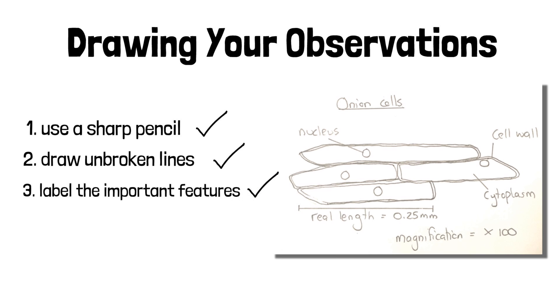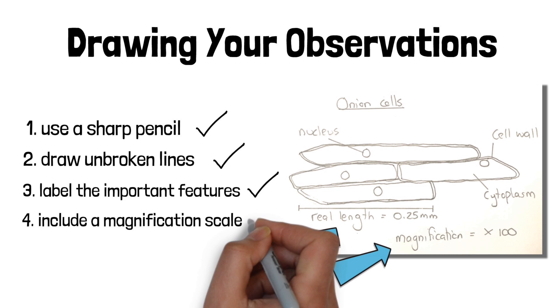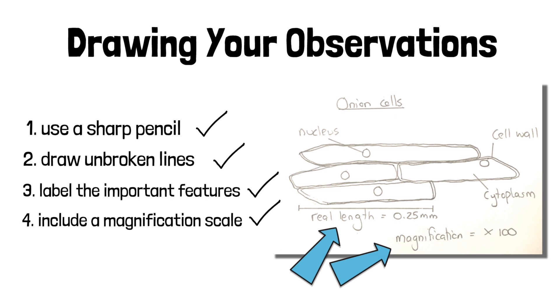The next thing to include would be a magnification scale. We can see from the diagram that they've said the magnification is 100 times. And then they also put a scale in which shows what the real length is of something in the drawing. So we can see the real length here was 0.25 millimeters. That's really useful in future for working out the size of the other organelles.